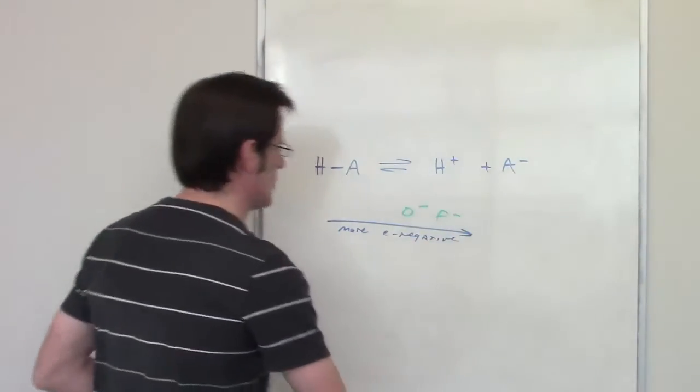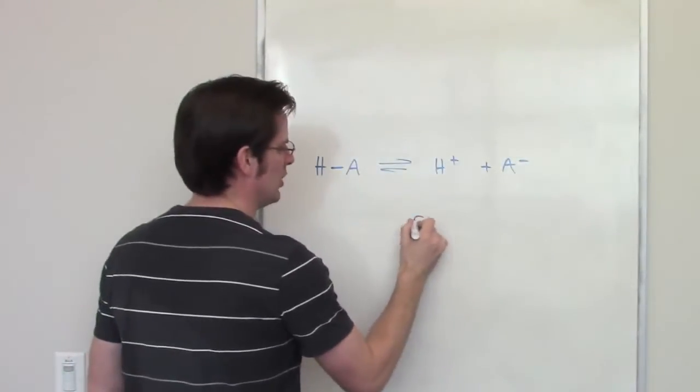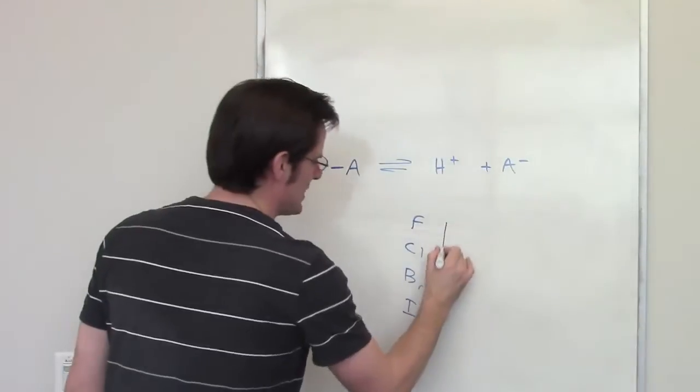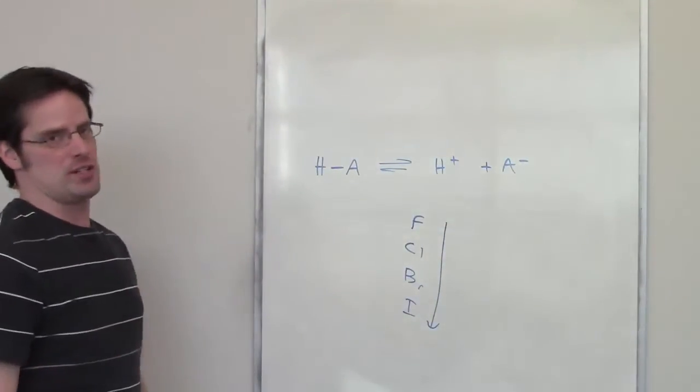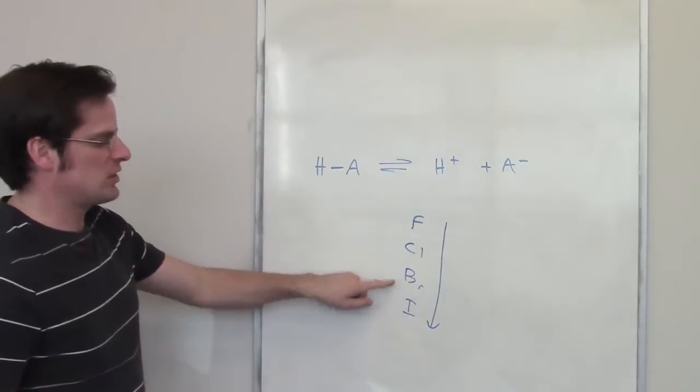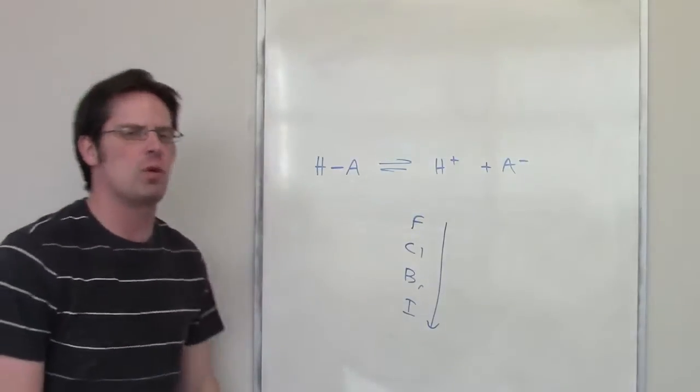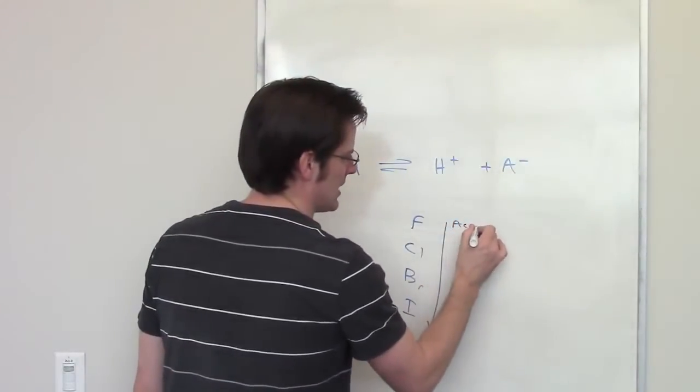Now, what happens as we go down a column. Well, I've got fluorine, followed by chlorine, followed by bromine, followed by iodine. As I go down a column, electronegativity actually decreases. Iodine is less electronegative than bromine, which is less electronegative than chlorine, which is less electronegative than fluorine. And yet, acidity increases as I go down.